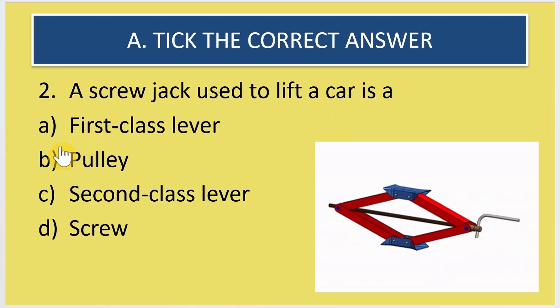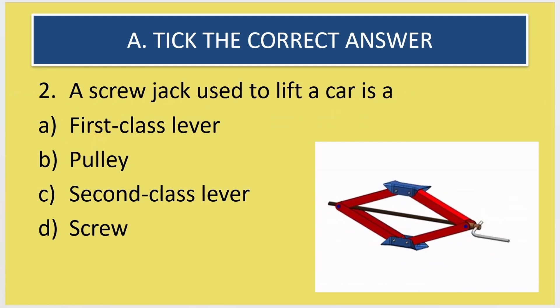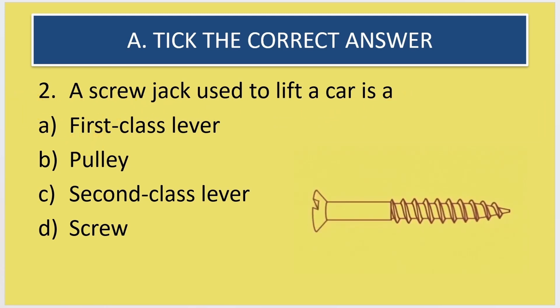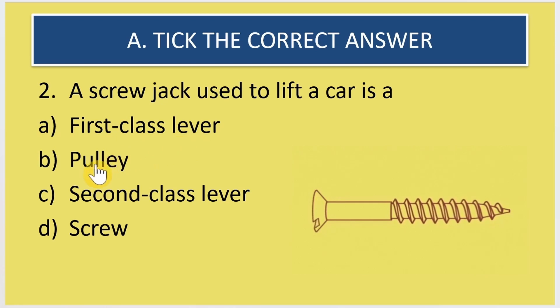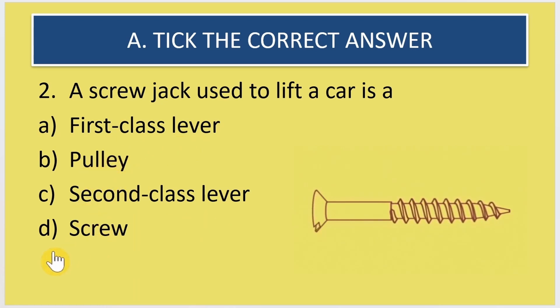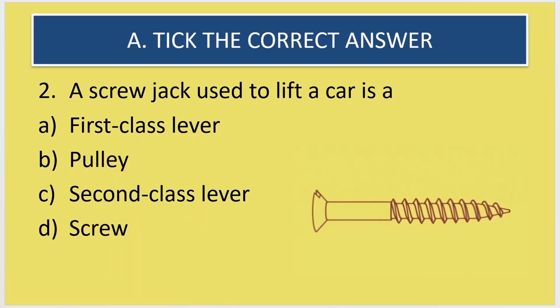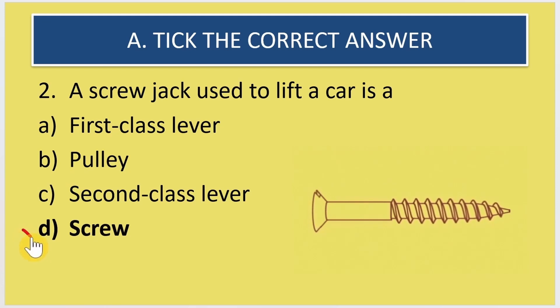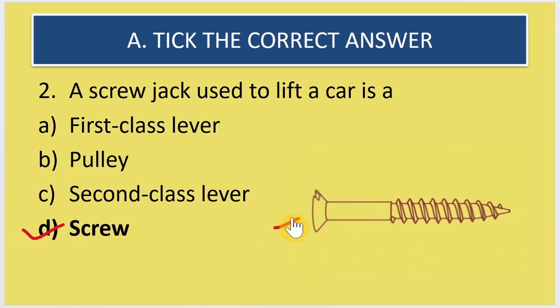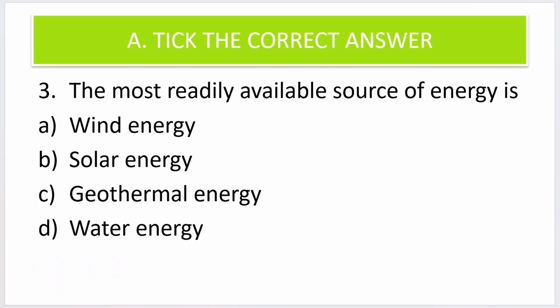Second question: a screw jack used to lift a car is a dash. The options are first class lever, pulley, second class lever, or screw. The correct answer is screw. This is the image of the screw jack.